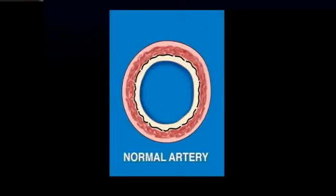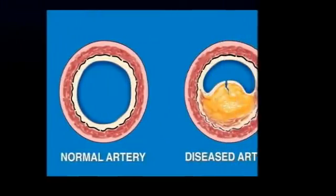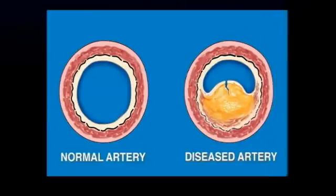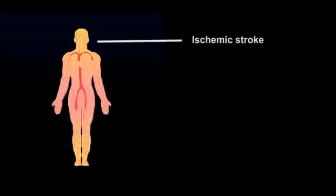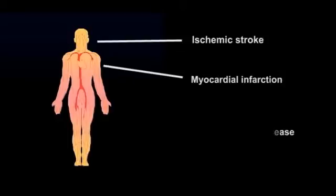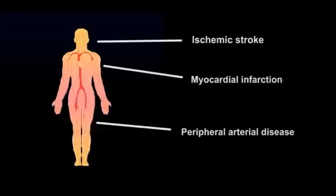A normal artery allows blood to flow in order to perfuse the appropriate tissues. When fatty deposits build up and atherosclerosis forms, the artery becomes diseased and therefore limits the flow of blood. Atherosclerosis is a systemic disease which can lead to ischemic stroke, myocardial infarction, and finally peripheral arterial disease.